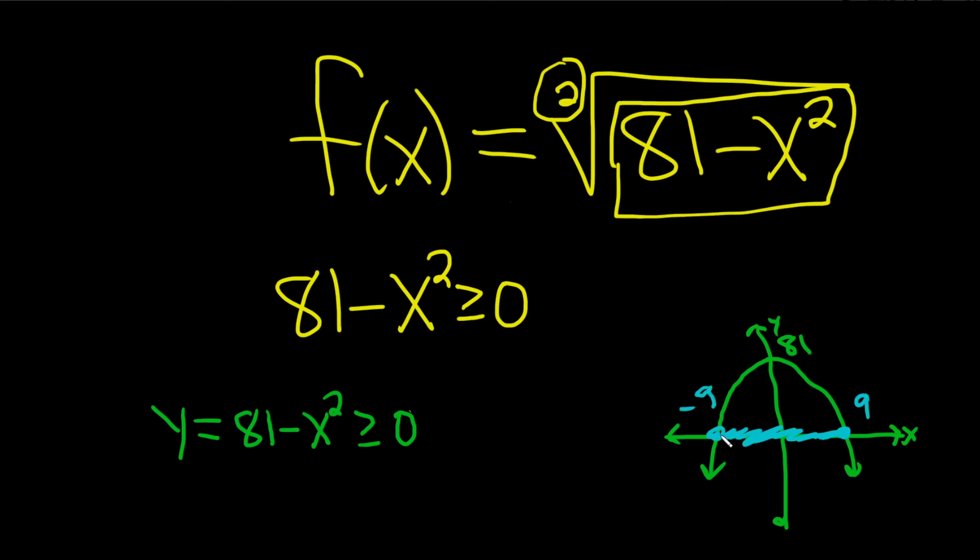So everywhere between negative nine and nine, including negative nine and nine, the graph of this function is zero or positive. In other words, y is greater than or equal to zero. So that means that the answer here would be negative nine to nine.